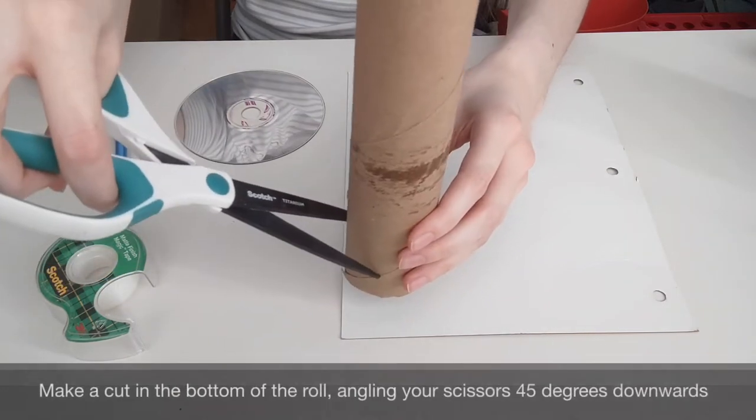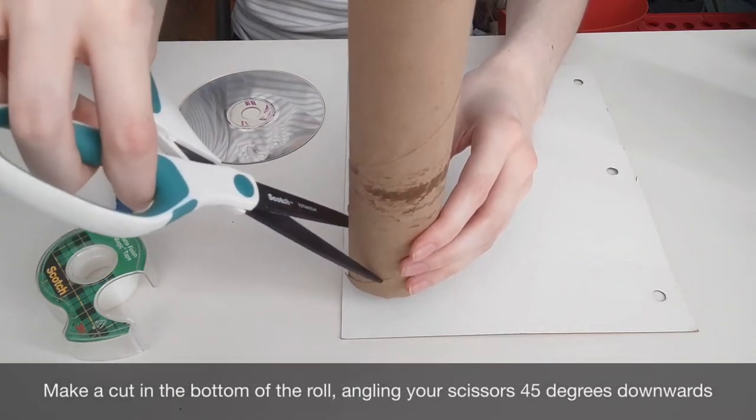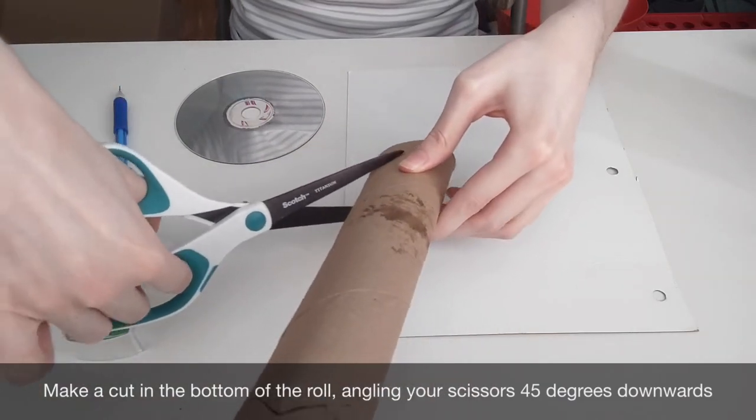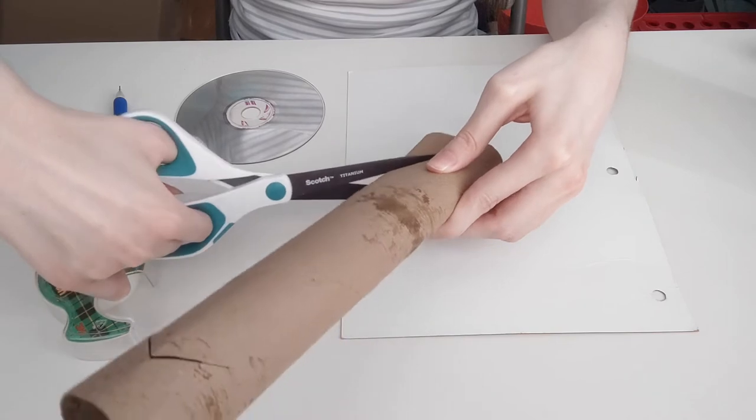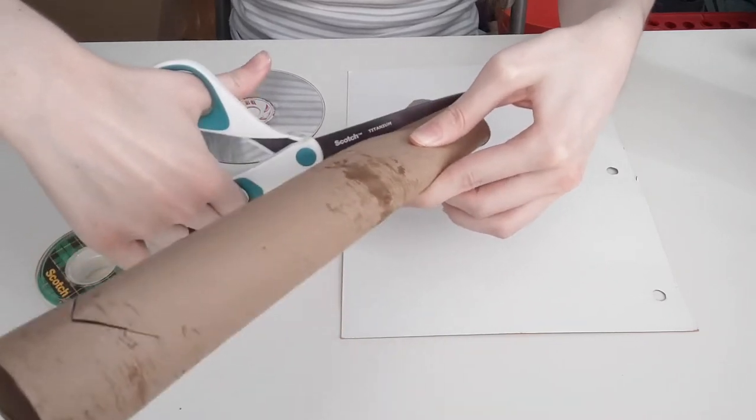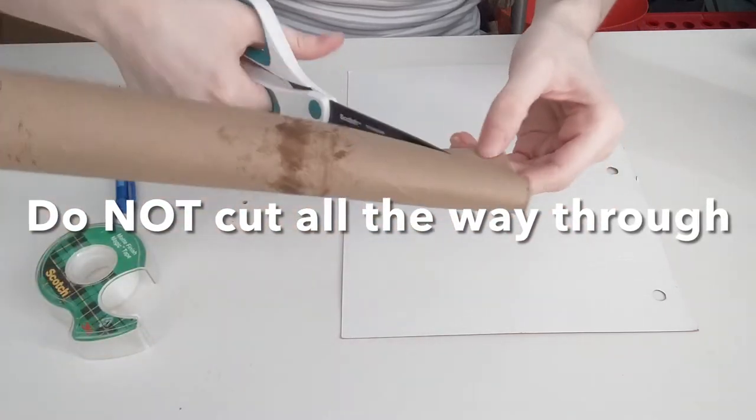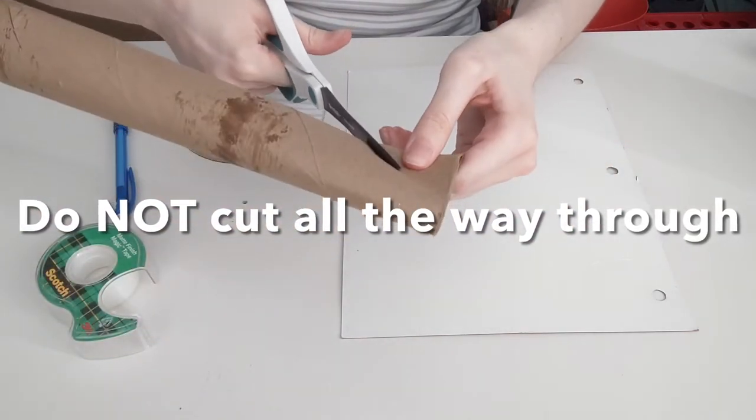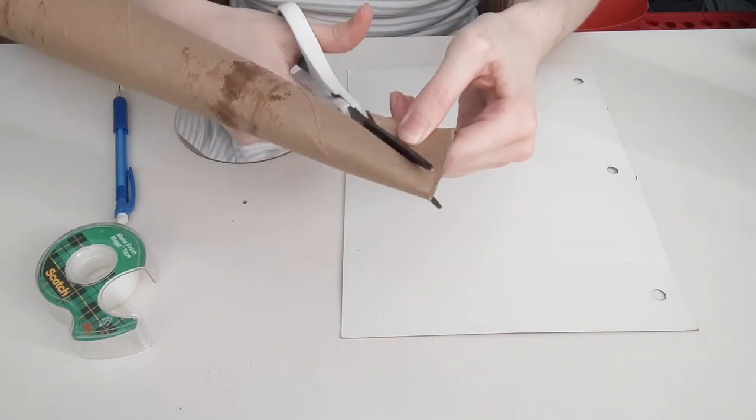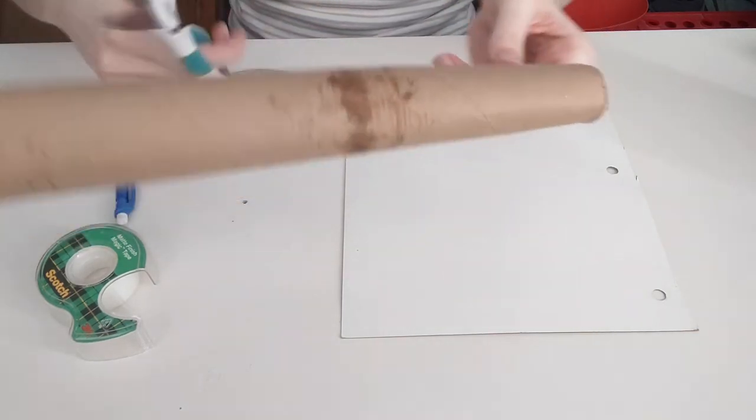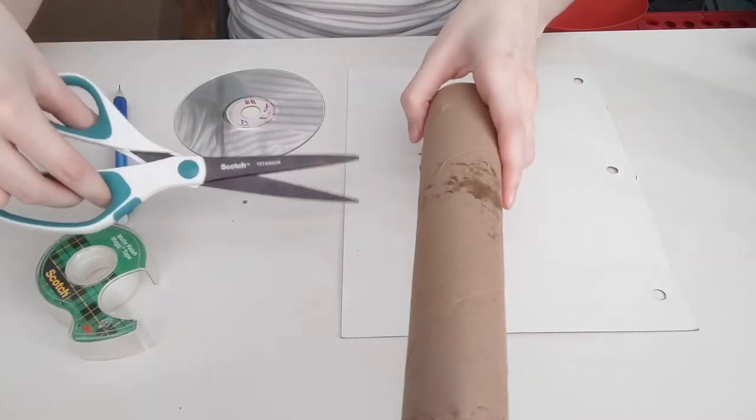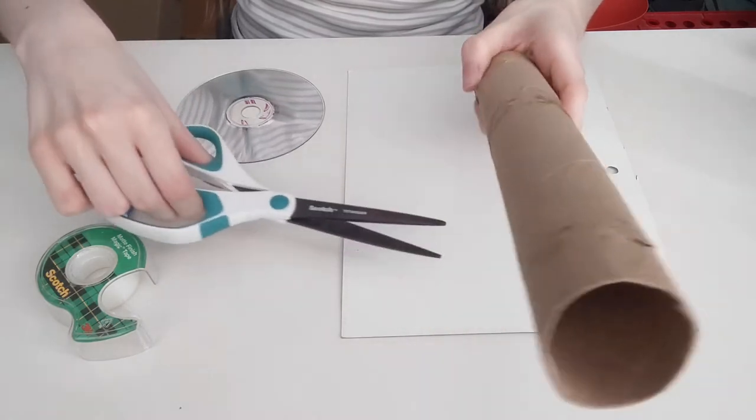So facing 45 degree angle downwards, like that, you're just going to cut a little ways in, and not all the way through to the other side or anything, just maybe like halfway. Also, since this is with scissors, if you need a parent or guardian or older sibling to do this step for you, totally just ask them.